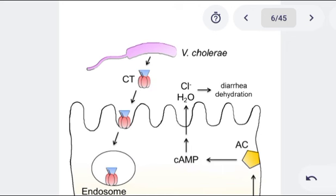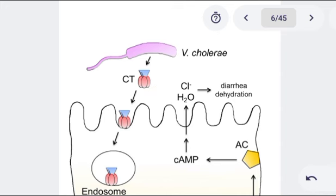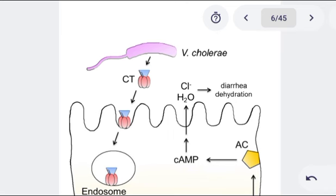What do these cholera toxins do? First of all, we need to understand that these cholera toxins are made up of two different subunits: the A subunit and the B subunit. We have got five domains for the B subunit, and for the A subunit it is one, but it is able to be cleaved into A1 and A2 domains.